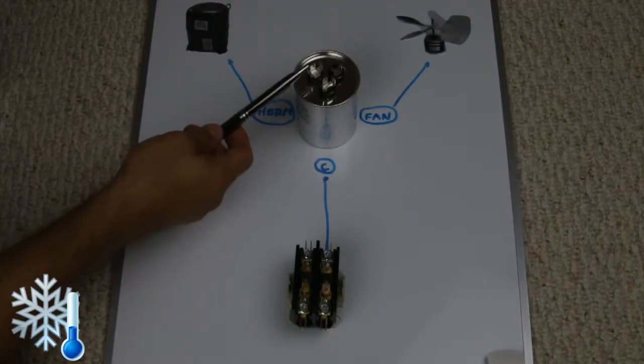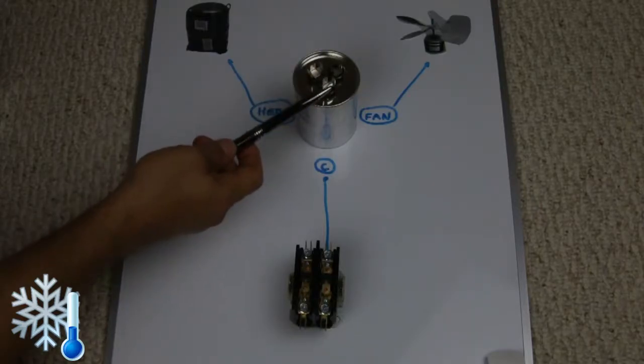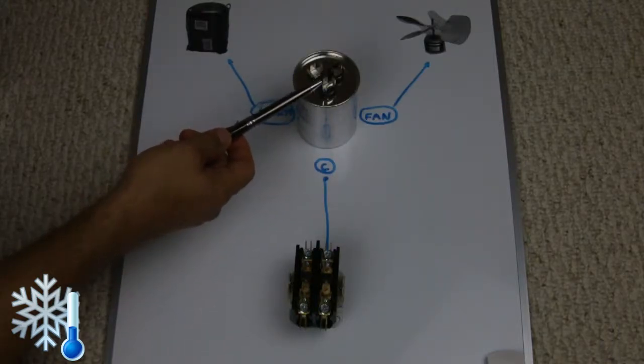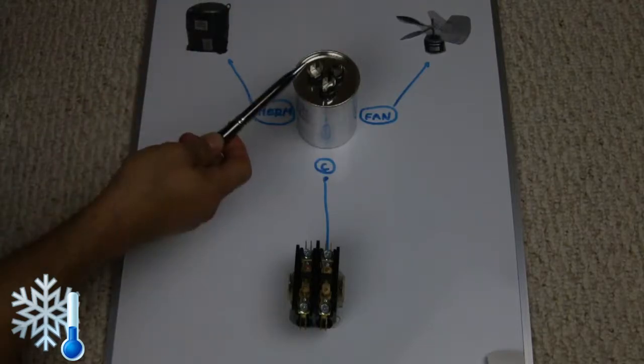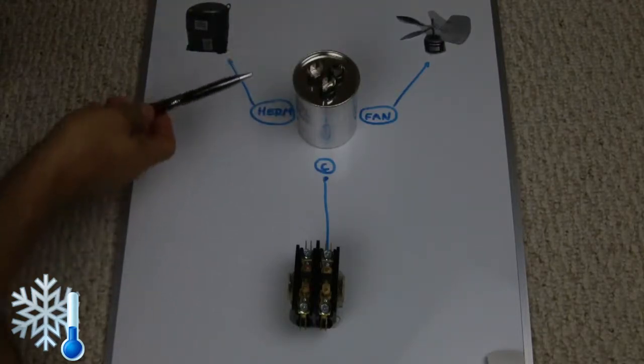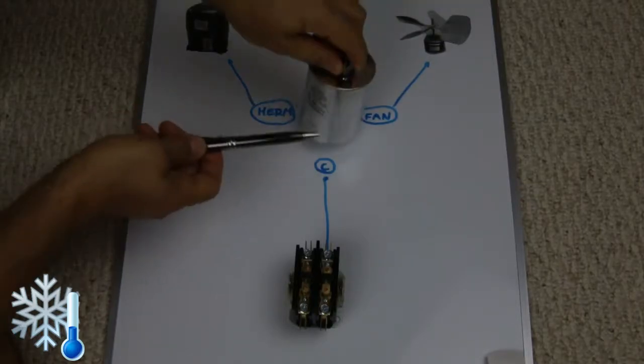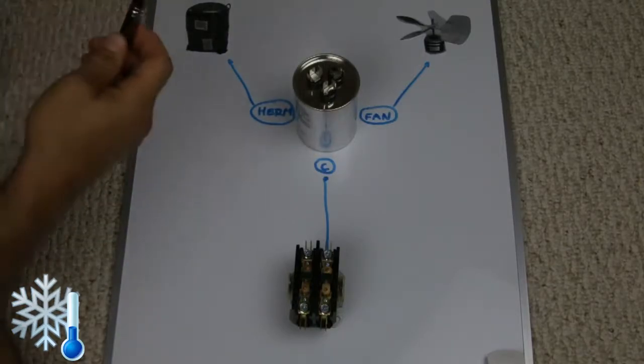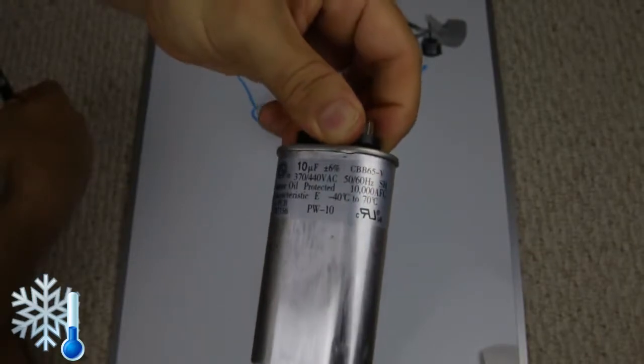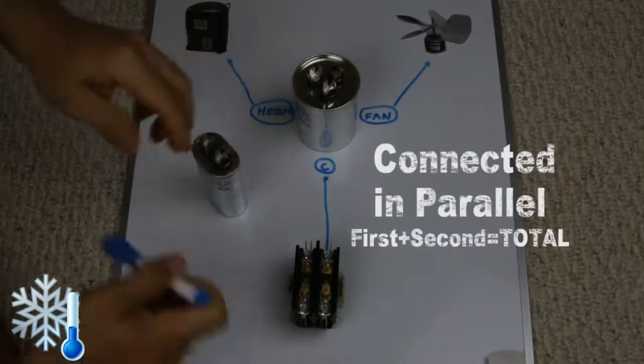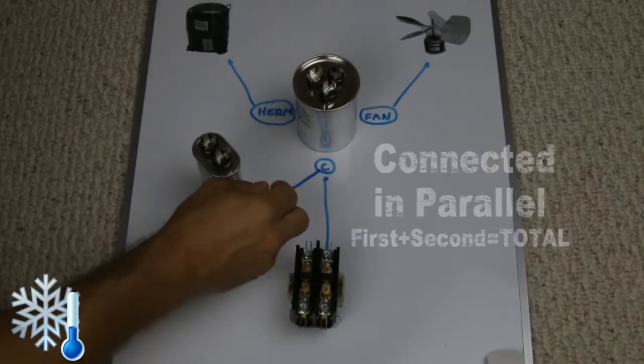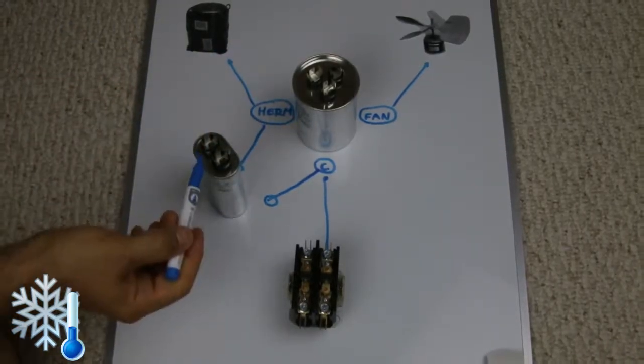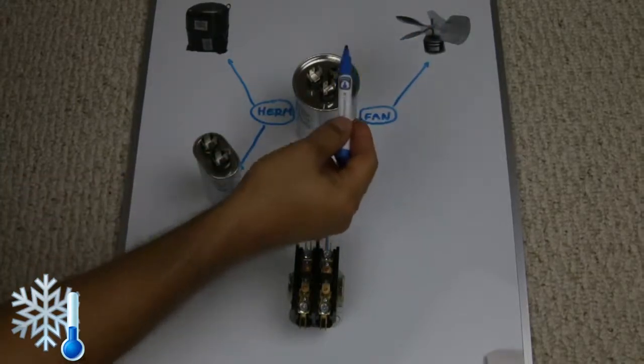What's the reason for multiple tips on every terminal? For example, the four for the common and three for the herm and two for the fan. That is if you want to add some additional capacitance. In our example we have a 45 plus 5. If you want to do a 55 plus 5, we can add an additional 10 microfarad to the system just by adding them to one leg going to the common and the second one going to the herm.